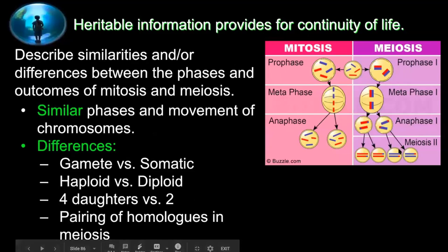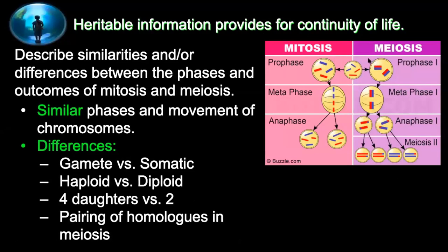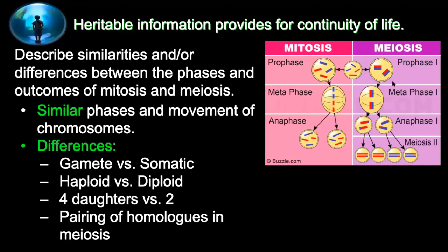Comparing mitosis and meiosis: they have similar phases and both go through a paired, sort, and segregate component. The difference is that meiosis goes through it twice and works with homologues — sorting mom's and dad's separately — whereas mitosis only goes through it once and sorts the whole set together. Mitosis makes identical copies called somatic cells, body cells. Meiosis makes haploid gametes, the sex cells, and these will all be genetically different from the original cell.